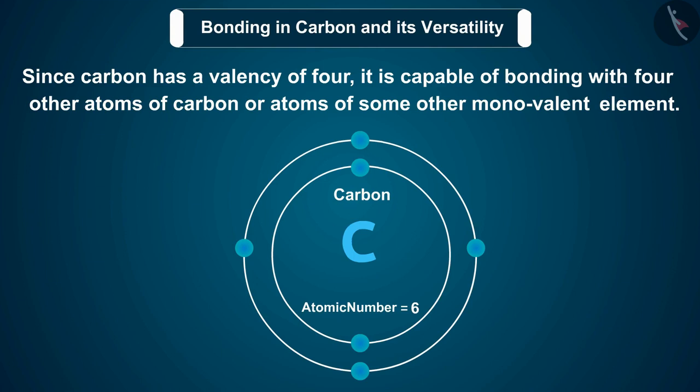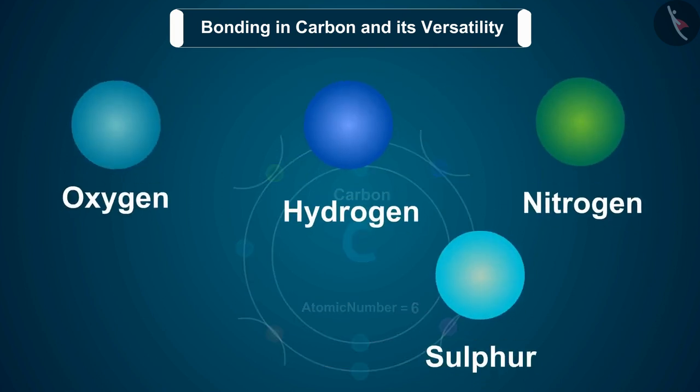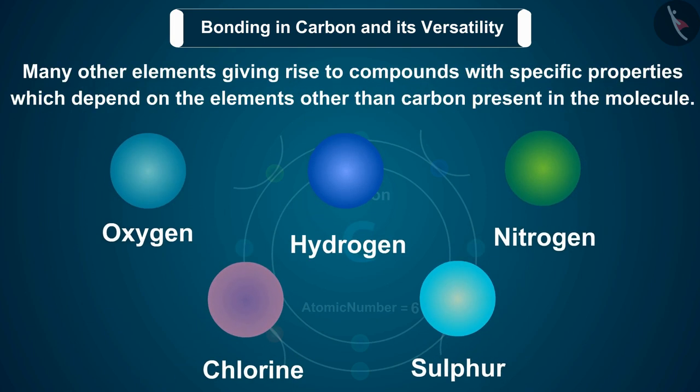Two, since carbon has a valency of four, it is capable of bonding with four other atoms of carbon or atoms of some other monovalent element. Compounds of carbon are formed with oxygen, hydrogen, nitrogen, sulfur, chlorine, and many other elements, giving rise to compounds with specific properties.